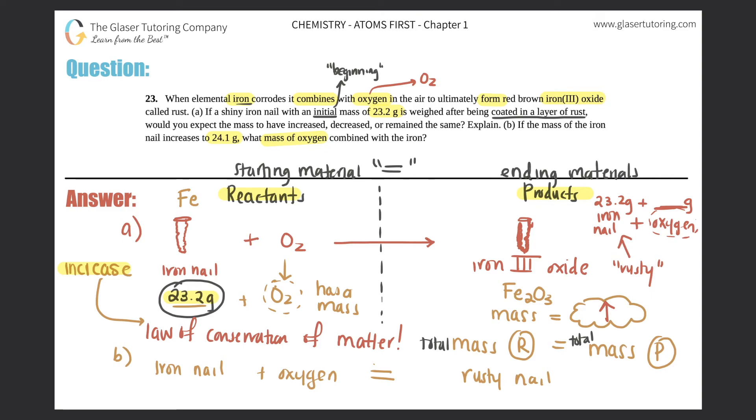They told us the iron nail was 23.2 grams, and now they're telling us that it increased to 24.1 grams. So we just got to figure out how much is here. We don't know what this is, so this would be labeled as X. So I'm going to say 23.2 plus X would equal 24.1. That is 0.9.